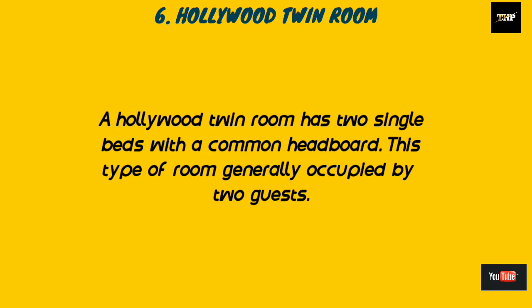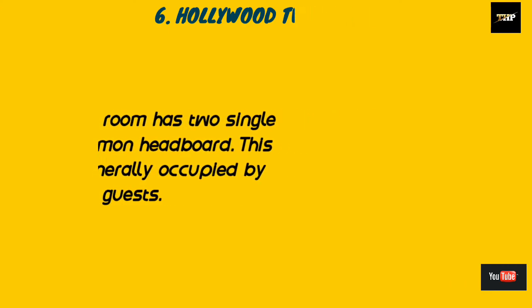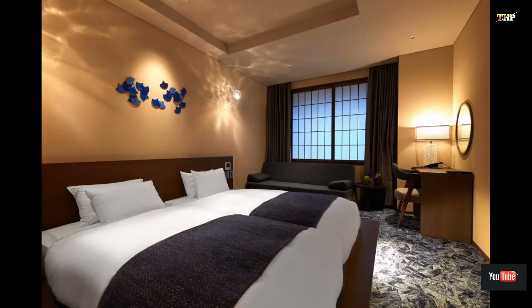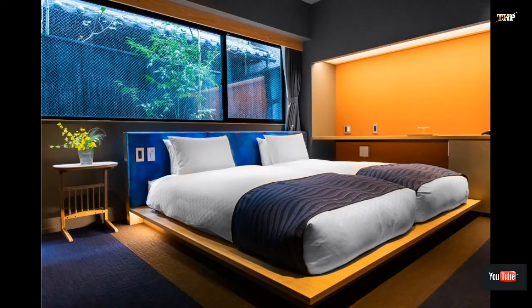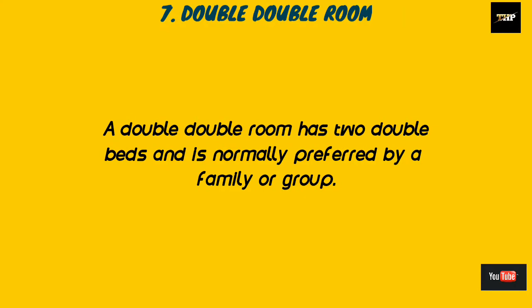The next one is the Hollywood twin room. A Hollywood twin room has two single beds with a common headboard. This type of room is generally occupied by two guests. It has a large floor space, and the two beds are connected with a single headboard. Here are some images of the Hollywood twin room.